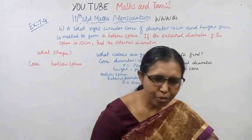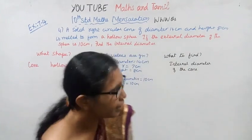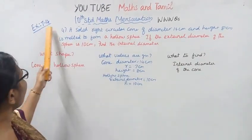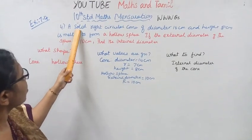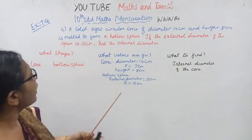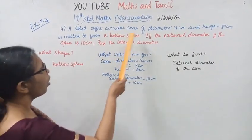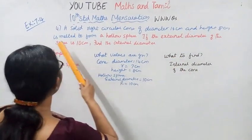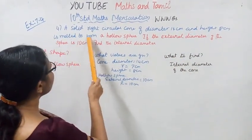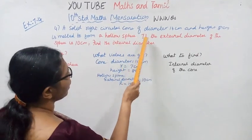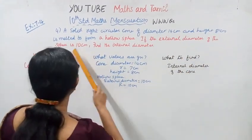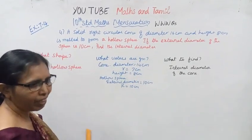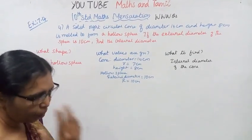Hello students, welcome to Max and Chaman channel. A solid right circular cone of diameter 14 centimeter and height 8 centimeter is melted to form a hollow sphere. If the external diameter of the sphere is 10 centimeter, find the internal diameter.